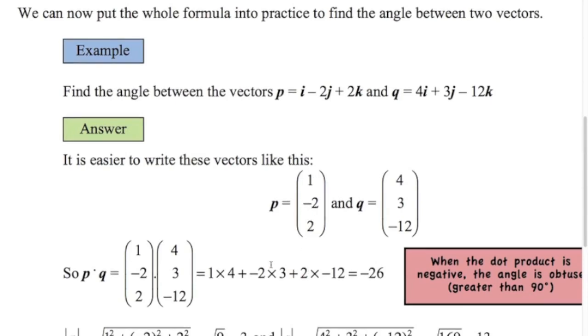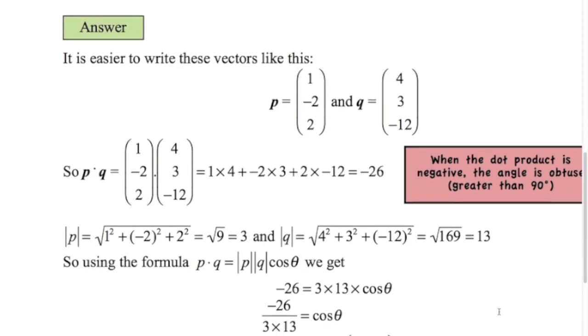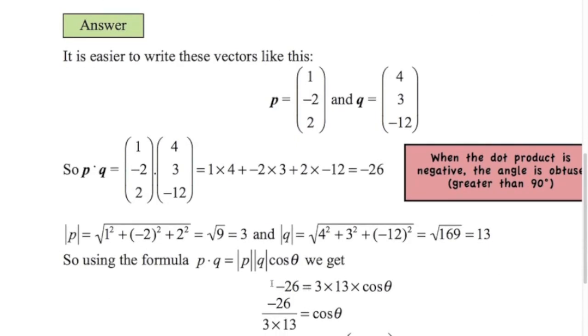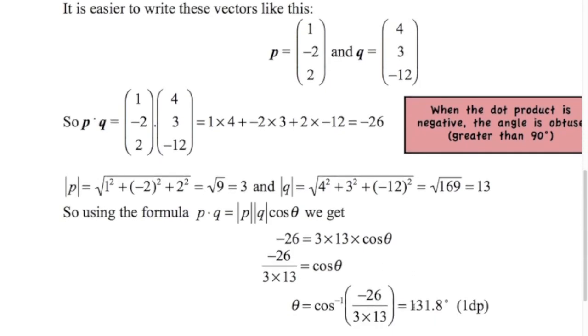Now we want the length of those vectors. Here we go. Length of P is three. Length of Q is 13. So those lengths work out nicely. And now we substitute everything into the formula. There's the dot product. There's the length times cos of the angle. So we divide both sides by three times 13. Work that out. Remember that gives you cos of the angle. So to get the angle, you've got to go shift cos on your calculator. It's 131.8 degrees.